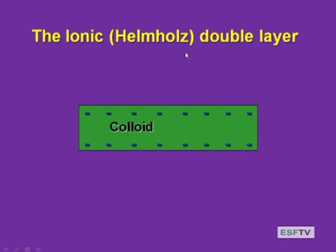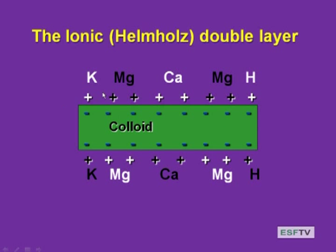Now we'll revisit the exchange and move to some chemistry. We talked about the ionic double layer. We can represent the colloid as a negatively charged surface — a picture of some crystalline surface. The second layer is the adsorbed cations: things like potassium, magnesium, calcium. There's an electrostatic attraction for these positively charged ions to this negatively charged colloid. This is the double layer — the Helmholtz layer — with the colloid as the first layer and the cations as the second.